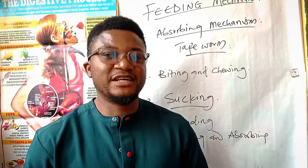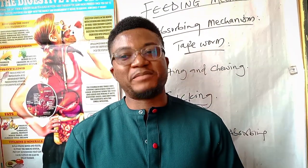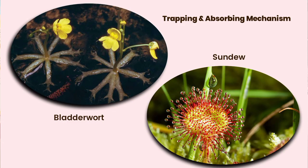The next mechanism of feeding is the trapping and absorbing mechanism. This is basically common among insectivorous and carnivorous plants such as the bladderwort and the sundew. These plants have structures that enable them to trap other organisms that come close to them, thereby absorbing all the nutrients in those organisms.